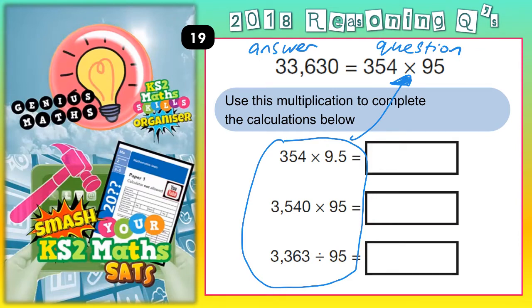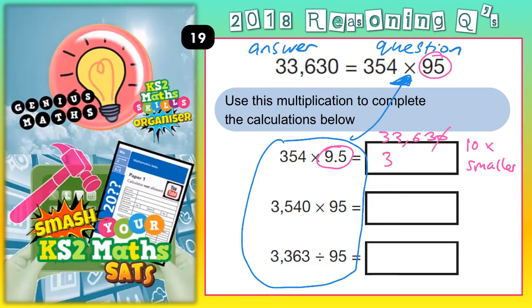If you take the first one, the 95 has been made 10 times smaller into 9.5. So 10 times smaller, and that's going to make your answer 10 times smaller. So 10 times smaller than 33,630 is knocking the 0 off — dividing by 10 — that's going to leave us with 3,363.